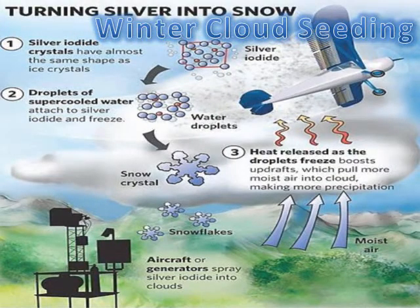Wintertime cloud seeding uses silver iodide, which is then collected by clouds containing supercooled water droplets. The silver iodide then turns into ice crystals before becoming large snowflakes as it falls to the ground, increasing the snowpack.